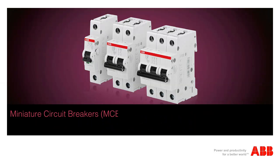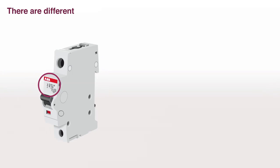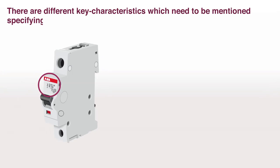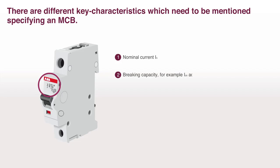Miniature circuit breaker, MCB, specification. There are different key characteristics which need to be mentioned when specifying an MCB. Nominal current, IN. Braking capacity, for example ICN according to IEC EN 60898-1.